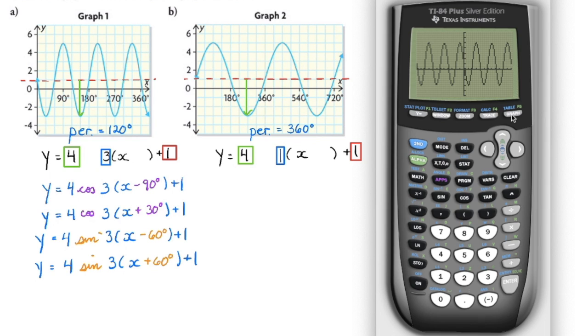If it's a cosine graph, I'm looking to see where is that maximum, knowing that the standard y equals cosine x would be on the y-axis. So I can see in this case, it's shifted 90 degrees to the right. We indicate that by this minus 90, which means we're going to the right 90 degrees.